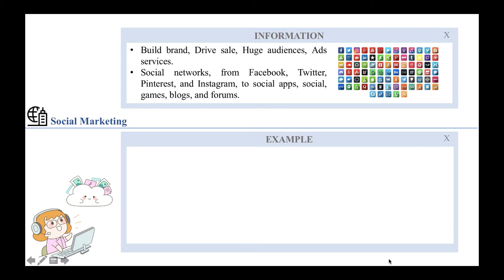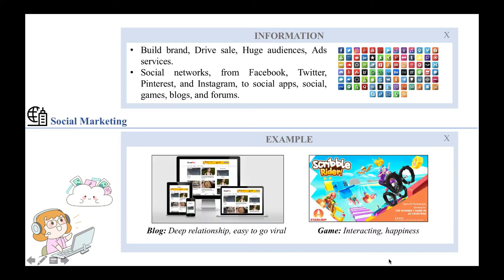The first is social marketing. Social marketing and advertising involves the use of online social networks and communities to build brands and drive sales revenue. There are several kinds of social networks, from Facebook, Twitter, Pinterest, and Instagram, to social apps, social games, blogs, and forums. Social media plays a huge role in e-commerce by increasing audience reach, better sales, and offering services directly. Blogs are more personalized, build deeper relationships, and are easier to make viral.